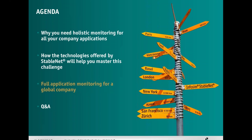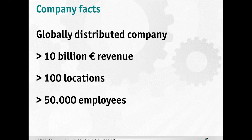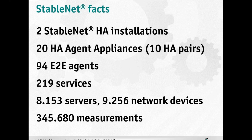After showing the different StableNet technologies to achieve holistic monitoring, I will now give you an exclusive insight into how StableNet was used to achieve full application monitoring for a global company. The company is a globally distributed company with over 10 billion euro revenue, more than 100 locations, and more than 50,000 employees. For this project, we had two StableNet high-availability installations with 20 high-available agent applications — 10 pairs — and additionally 94 end-to-end agents installed on nearly all locations worldwide to simulate user experience.